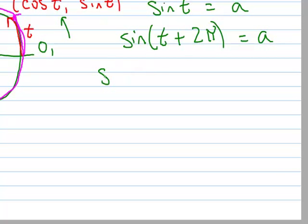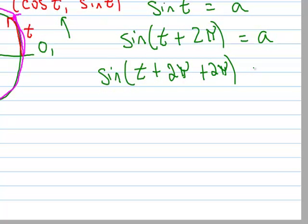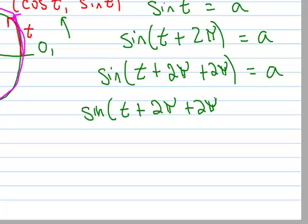And what if I went around more than that? So T plus 2π, and I went around again, so I got another 2π. I won't draw that on the sketch, but you could visualize that — I'm back where I started again, so the sine value is the same. And I could go around again: T plus 2π, plus 2π, plus 2π. And of course the value would be the same. I could keep doing that indefinitely.